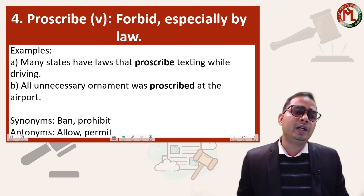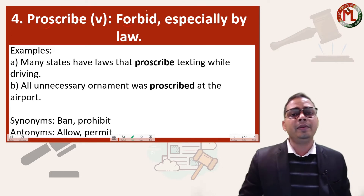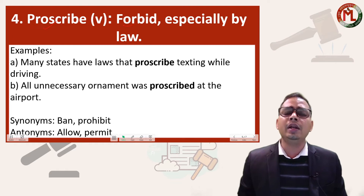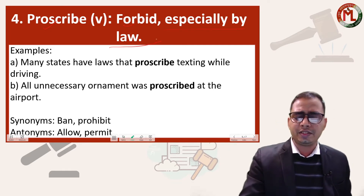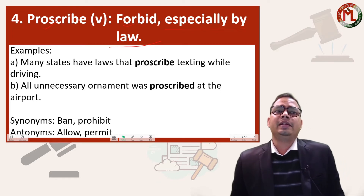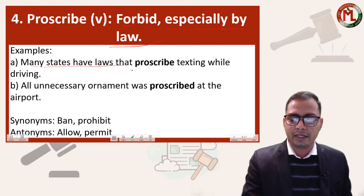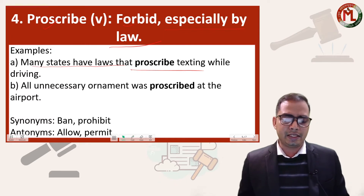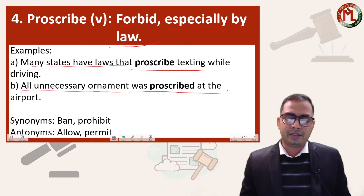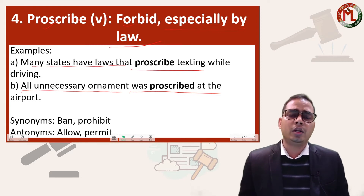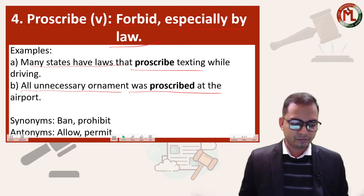Moving forward, the fourth word is 'proscribe.' This is a law-related word, so it's one of the important words in the list. Proscribe means to forbid — whenever something is prohibited, especially by law, it is called proscribed. It is a verb and can be interchanged with 'forbid.'